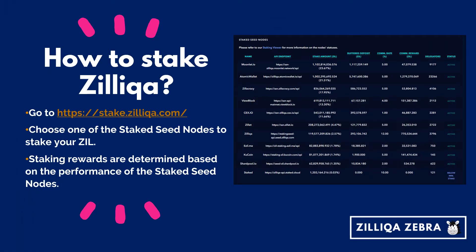To start your staking, go to the URL stake.zilliqa.com, then choose one of the Staked Seed Nodes or SSNs to stake your Zill. SSNs are a variant of seed nodes run by staking partners and are expected to serve JSON RPC requests from the community. In return for the service, these nodes are regularly given staking rewards in the form of Zill, determined based on the performance of the SSN.